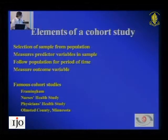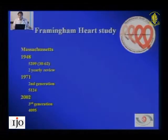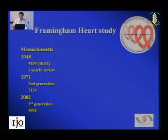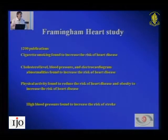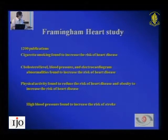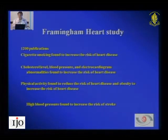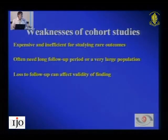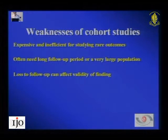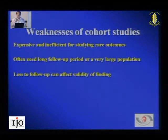The Framingham Health Study has now finished 3 generations with over 1,200 publications. Key outcomes include cigarette smoking found to increase the risk of heart disease, as well as cholesterol levels, blood pressure, and ECG abnormalities. Cohort studies are important but have several limitations: they are expensive, inefficient when studying a rare outcome, require long follow-up, and are prone to severe attrition and loss to follow-up. When deciding sample size, all these factors must be considered from the beginning.